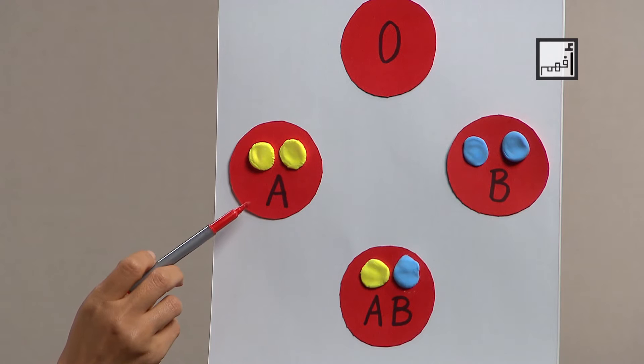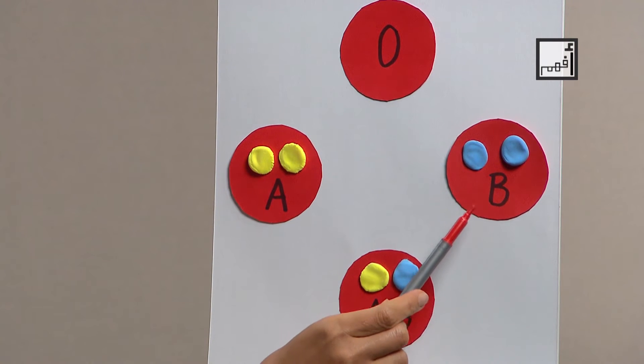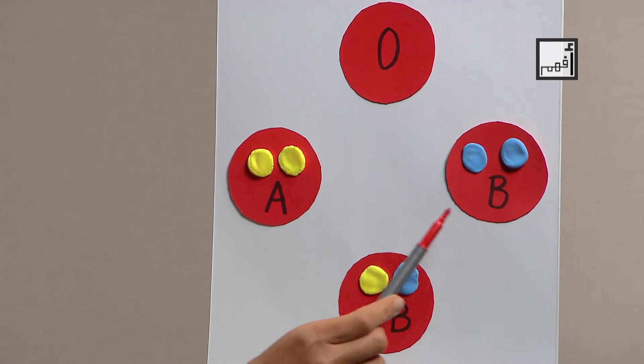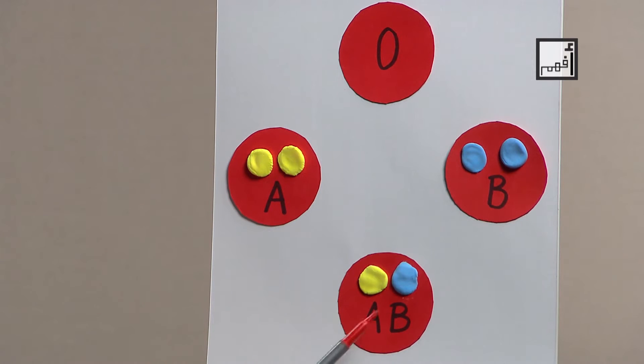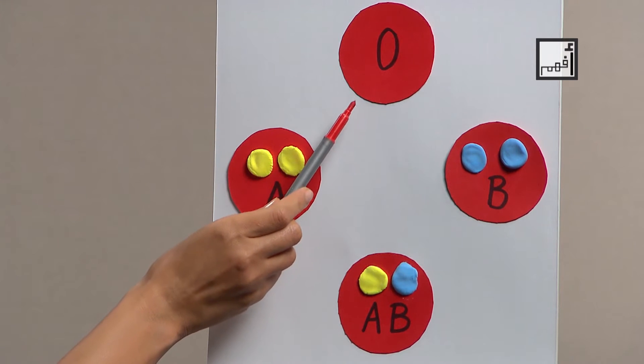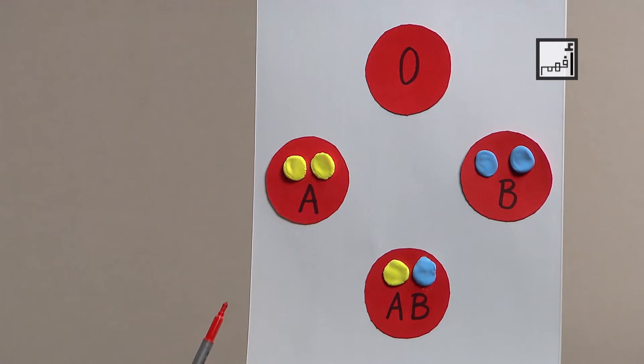Another group of people who have another certain protein, say protein B, they named them group B. Another group of people who have both of the two previous proteins, A and B, they named them group AB. Another group of people who have neither of the two previous proteins, they named them group O, or actually zero.